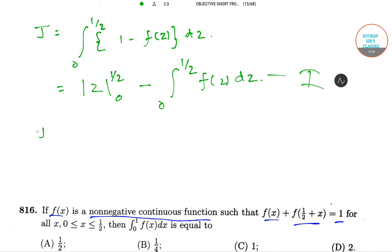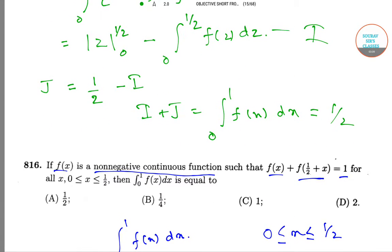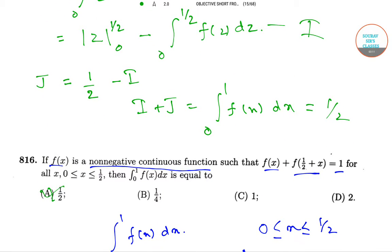So we have J equals 1/2 minus I. So I plus J, which is our integral 0 to 1 f(x) dx, equals 1/2. So the correct option is option number A.